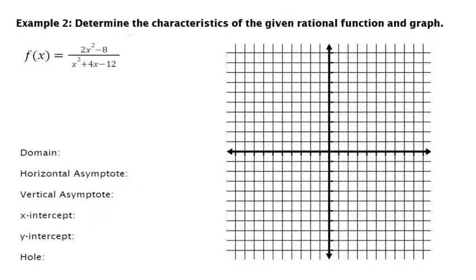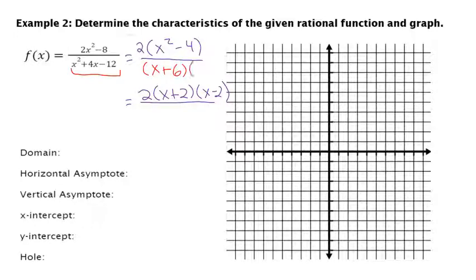For this last example, it's pretty much the same thing. We're going to factor it out. On the top, I have a GCF of 2 I can pull out. When I factor, I also have a difference of two squares. On the bottom, I can factor this trinomial. You're hopefully getting a little bit better at these, so I'm not going to write all the steps. We find our domain. We always do it before we reduce anything, so it's negative 6 and 2.